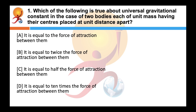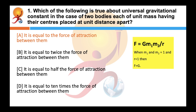Question one: which of the following is true about universal gravitational constant in the case of two bodies, each of unit mass having their centers placed at unit distance apart? The correct answer is A. The universal gravitational constant is equal to the force of attraction between the two bodies. This can be shown as F = G·M1·M2 / R², where M1, M2, and R are all equal to 1, giving F = G.